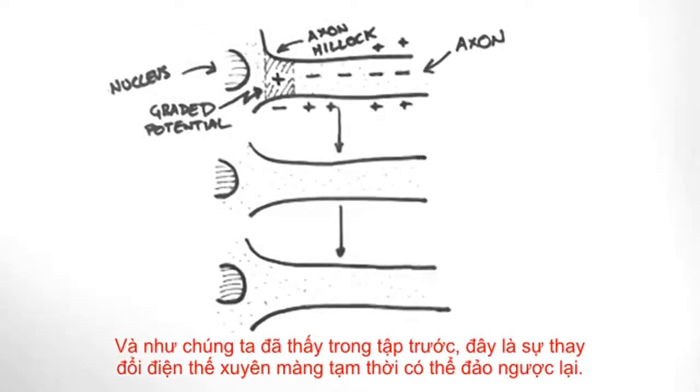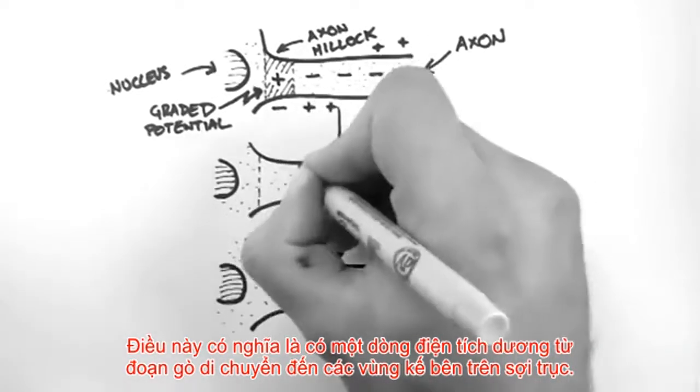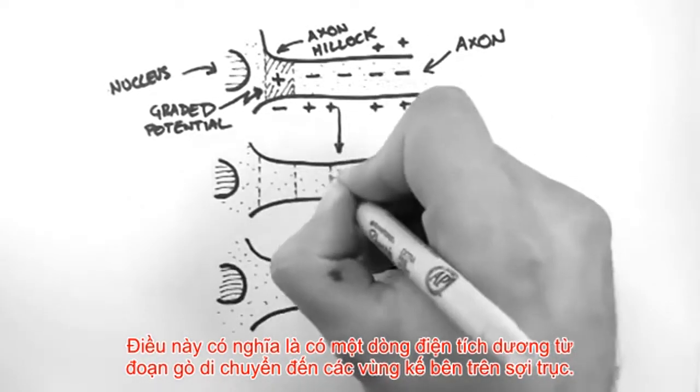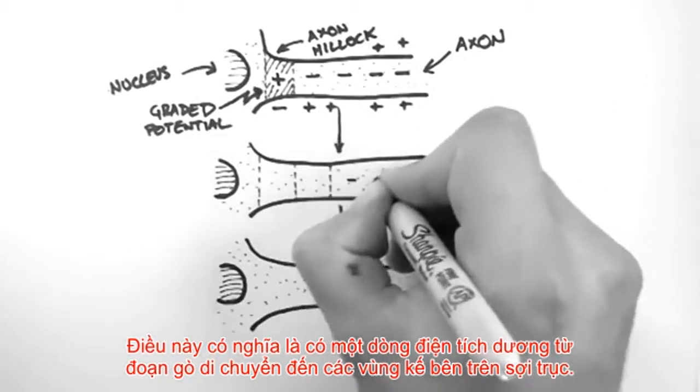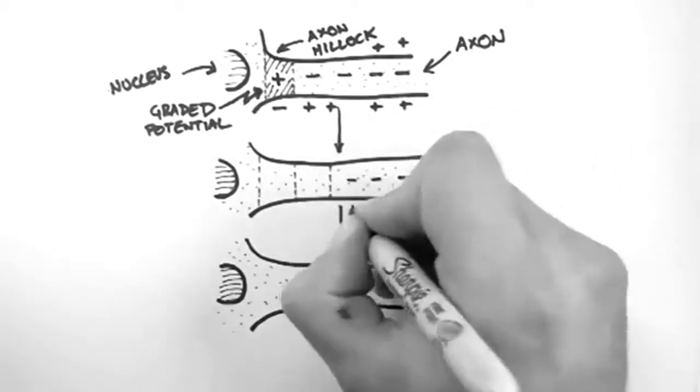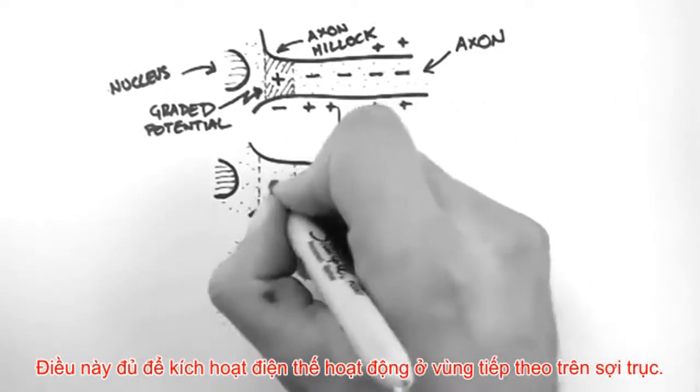The positive stimulus of the graded potential is enough to trigger an action potential in the axon hillock. And as we've seen in the last video, this means that there is a transient reversal of the charges across the membrane. Now what this means is that there is some positive charge from the axon hillock that flows into the next segment of the axon. This is enough to trigger the action potential in the next part of the axon.